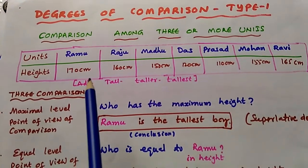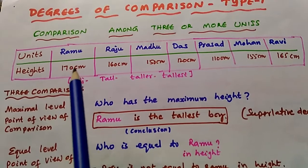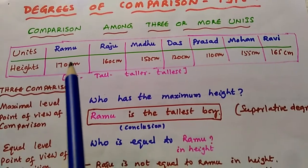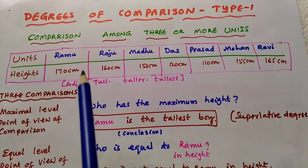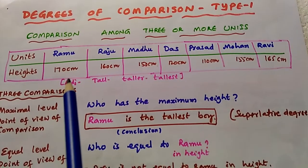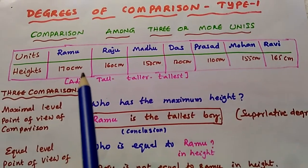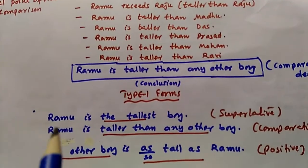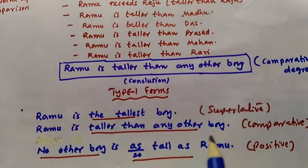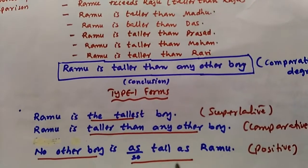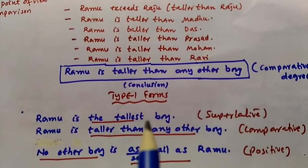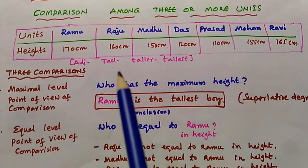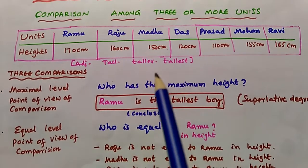Now look at a table where only one person has the maximum height — that is Ramu. Whenever we compare more than three units and find only one person with the maximum level of that quality, we get the type 1 form: 'Ramu is the tallest boy,' 'Ramu is taller than any other boy,' and 'no other boy is as tall as Ramu.' If more than one person has the maximum height, we get the type 2 form.